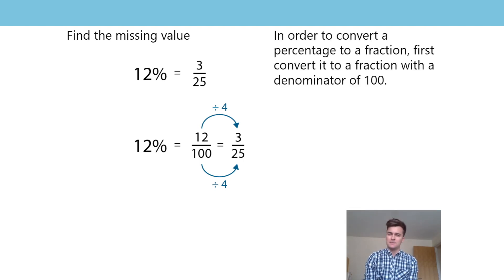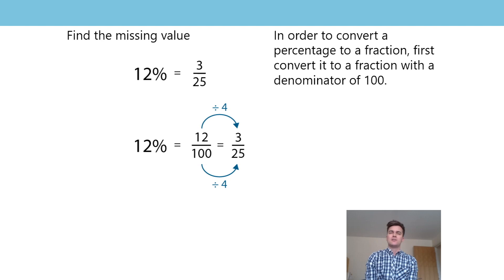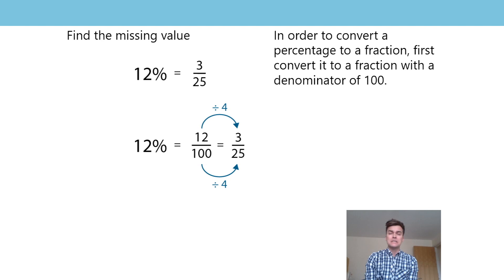My sentence is changing a little bit now. In order to convert a percentage to a fraction, first convert it to a fraction with a denominator of one hundred. Can you say that on three? One, two, three: first convert it to a fraction with a denominator of one hundred. Good work — keep that sentence in your mind, particularly for the practice activity in a little while.